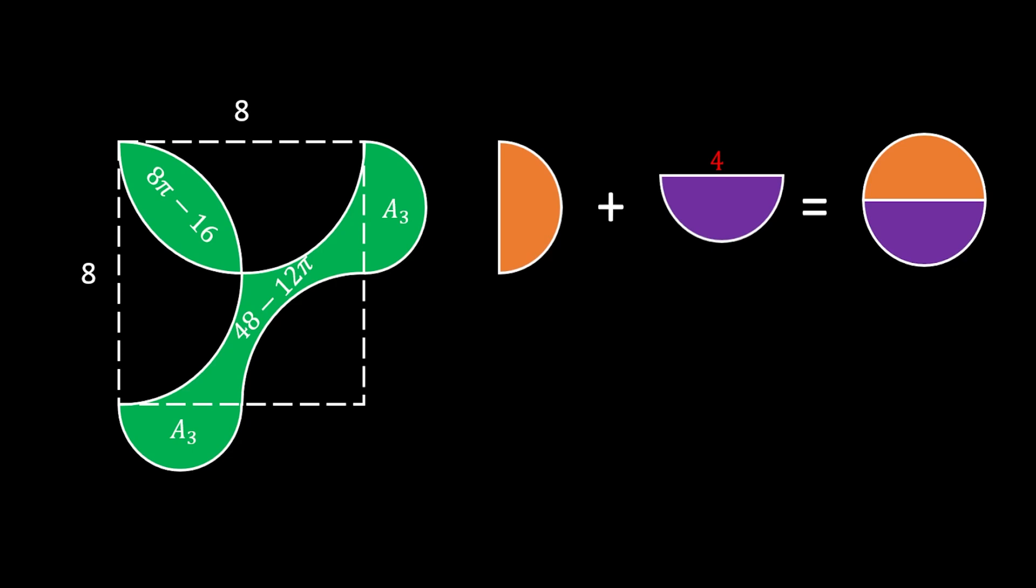Since the diameter of the circle is 4, that means that its radius is 2. So area number 3 is equal to r² times π, or the area of the circle, and that is 2² times π. In this case, area number 3 is equal to 4π.